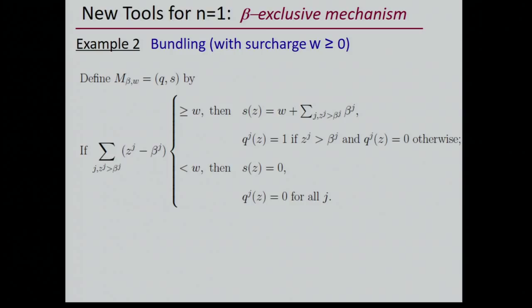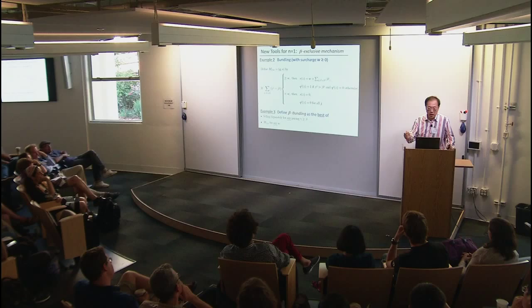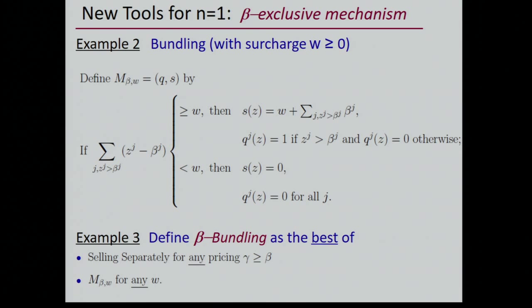Nobody wants to pick something for which their true valuation is less than the price. We offer this pricing: you can pick any subset, but you must pay beta_j plus an additional w. If your total excess valuation is less than w, you will not buy. We combine examples one and two to define the beta bundling as the better of these two possibilities: selling separately at any price gamma ≥ beta, or bundling with surcharge for any surcharge value w.